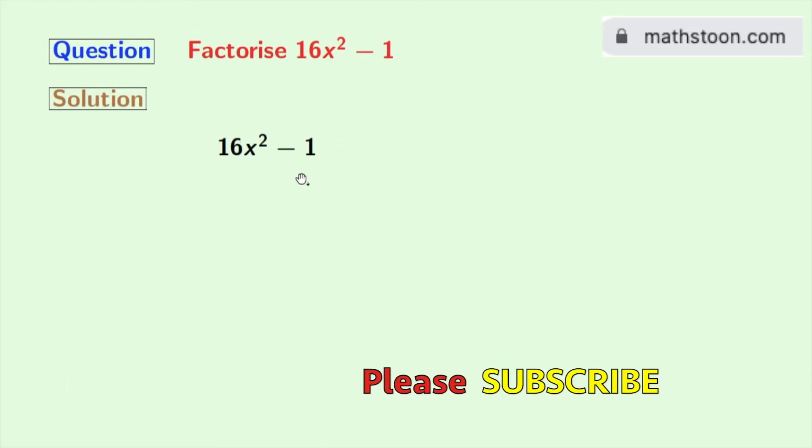This is our given expression: 16x² - 1. Now, to factorize this, we will express each of these terms as a square of something. Doing so, we get (4x)² - (1)².